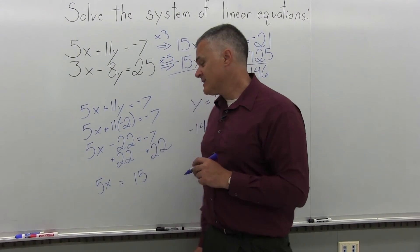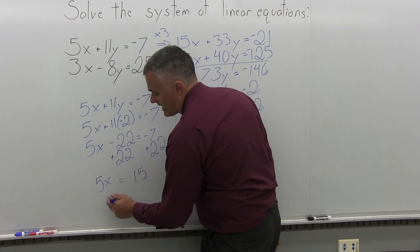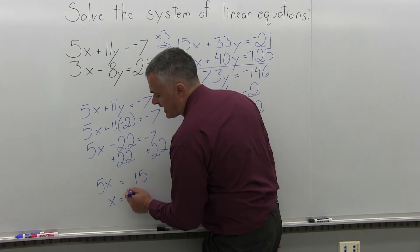So I have 5x on the left and now negative 7 plus 22 will make positive 15. And now, divide out the 5 that's in front of the x. So x will be 15 divided by 5 which comes out to 3.